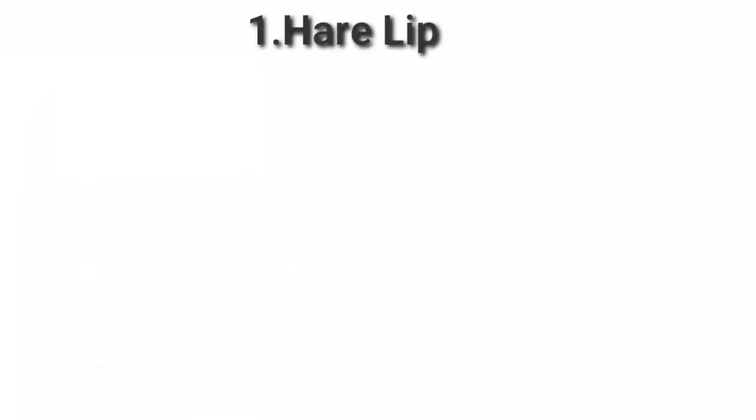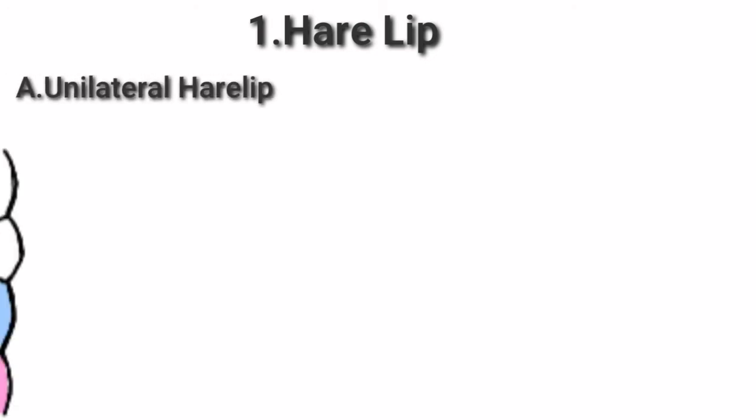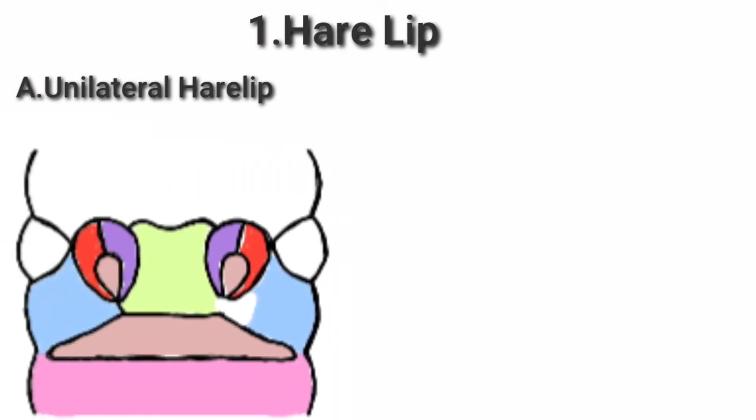The first anomaly is the hare lip. You know the hare, or rabbit, has a median cleft — that's why the name is called hare lip. There are many variants: unilateral hare lip, bilateral hare lip, and median hare lip or cleft lip.